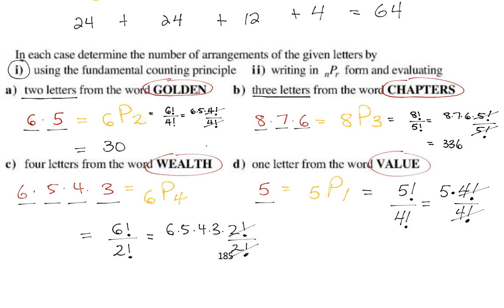On the exam, for the most part it's just multiple choice or numeric — you don't really have to show this kind of work, you can use your calculator. If you were asked to take letters from 'chapters' and do 3 at a time, just type 8P3 in the calculator and you're done. It's a big first lesson, so I'm showing you everything and how it's all connected.